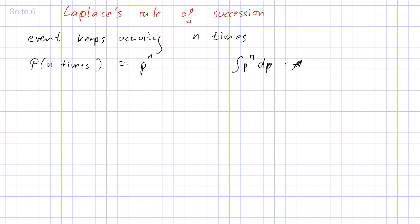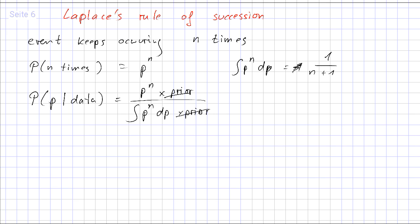Over the probability, that's wrong. The probability distribution for P, or the posterior probability, so the probability that we have some event probability P given our data again, is P to the N, and assuming a constant prior again, divided by the integral over this times the prior. And this integral is one over N plus one. So what we get here is N plus one times P to the power of N. That's our probability distribution.